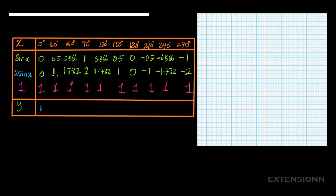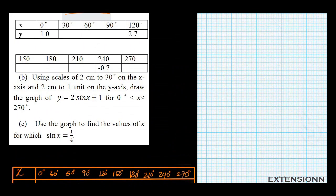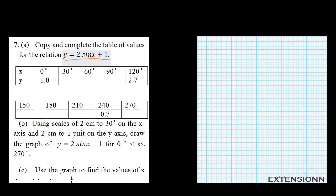Adding the values: 1 + 0 = 1; 1 + 1 = 2; 1 + 1.732 = 2.732; 2 + 1 = 3; 1.732 + 1 = 2.732; 1 + 1 = 2; 1 + 0 = 1; −1 + 1 = 0; −1.732 + 1 = −0.732; −2 + 1 = −1. At x = 240, y is approximately −0.7, which matches the given value of −0.732. That's our table — the first answer.